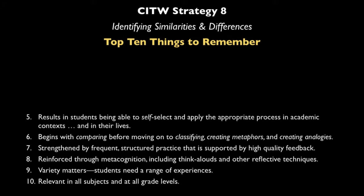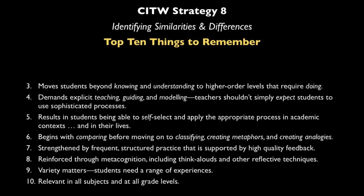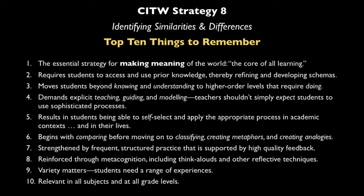Number five: results in students being able to self-select and apply the appropriate process in academic contexts as well as in their lives. Number four: it demands explicit teaching, guiding, and modeling — teachers shouldn't simply expect students to use these sophisticated processes without showing them how. Number three: move students beyond knowing and understanding to the higher order levels that require doing. Number two: the strategy requires students to access and use prior knowledge, thereby refining and developing schemas. And number one: it is the essential strategy for making meaning of the world — what the authors call the core of all learning.